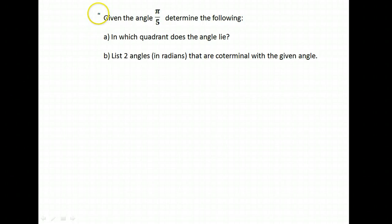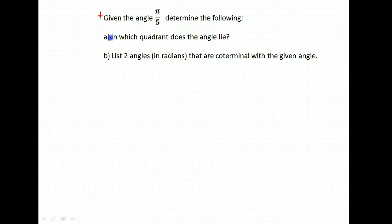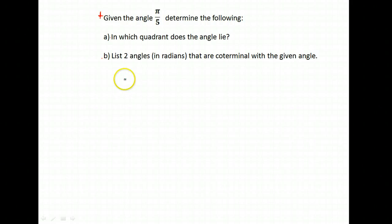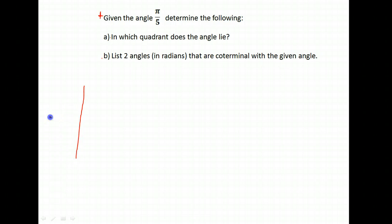We're getting more comfortable with radians on the unit circle. We will be given a radian measure for an angle and asked what quadrant that angle is in, and what are two angles that are coterminal with this angle. Remember, coterminal means angles that end in the same place.